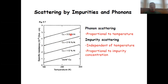When you increase the nickel content even further, the resistivity goes up even further. So you have impurity scattering, whereby the impurity scattering is proportional to the impurity concentration.